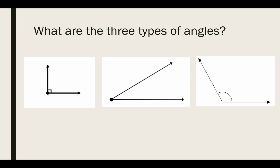The first angle we have is a right angle. A right angle is equal to exactly 90 degrees. A hint, there's always going to be a square angle if it's a right angle.